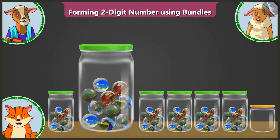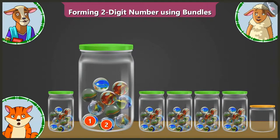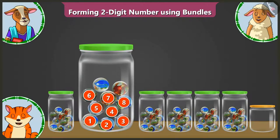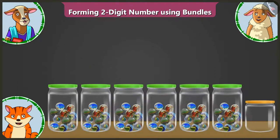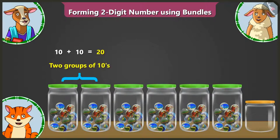Billy, you count the marbles in the second jar. Yes, ma'am. In the second jar, there are one, two, three, four, five, six, seven, eight, nine, and ten marbles. Yes, that is correct. So there are ten and ten — twenty — two groups of tens.